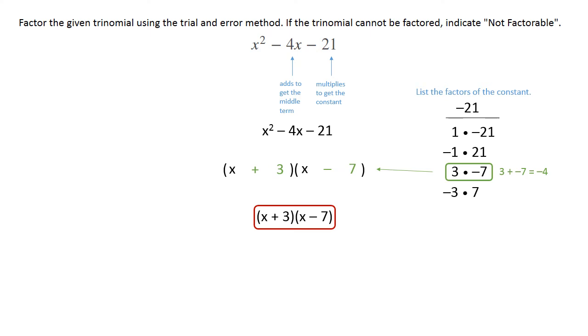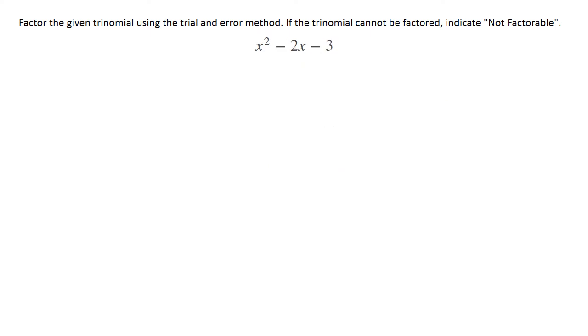Let's look at one more. In this case, same thing. You're looking for something that's gonna multiply to get the constant and add together to get the middle term. Don't forget when you list the factors of the constant, that even though it's negative 3, there is still always the 1 times 3 combinations.